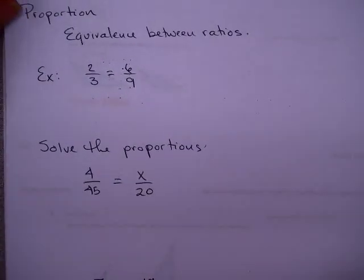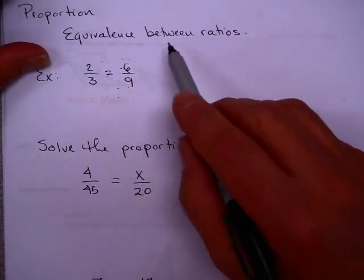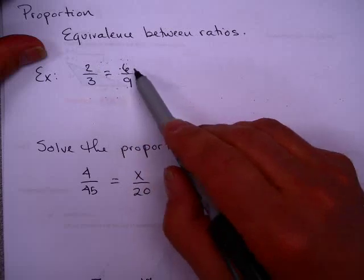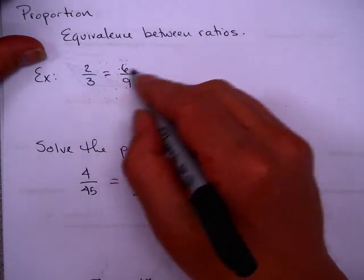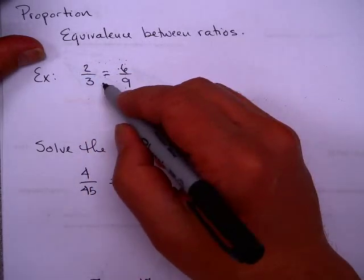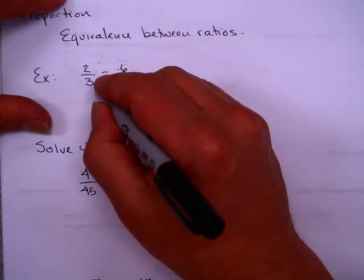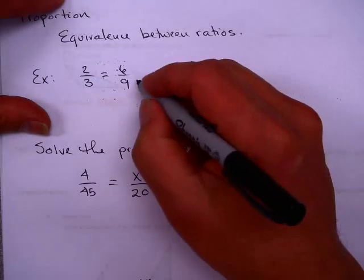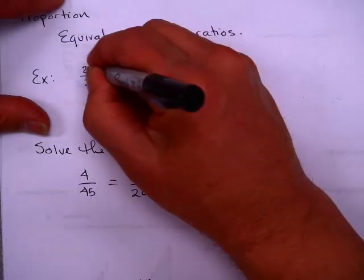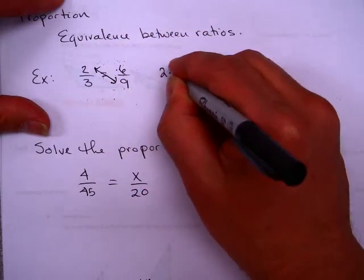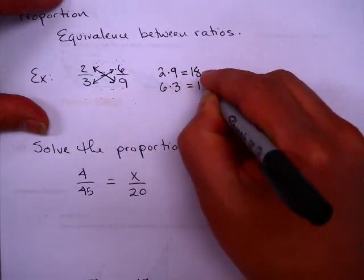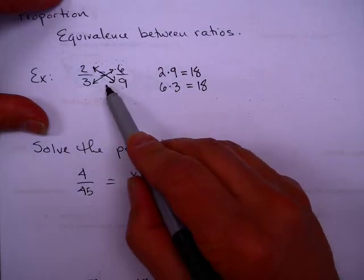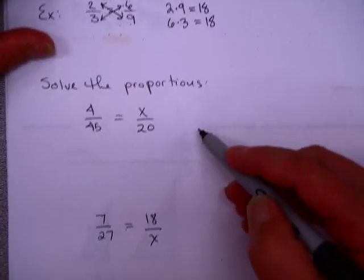What are some other things that we used ratios for? We talked about proportion. Proportion is just an equivalence between ratios. For example, here's a very simple one: 2 thirds equals 6 ninths. We can all agree with that. This is called a proportion right here, an equivalence between two ratios. One property that proportions have is that when you cross multiply, they end up with the same number. Look at this: 2 times 9 is 18, and 6 times 3 is 18. So this is true about all proportions. That can be used to help us solve proportions.